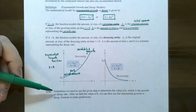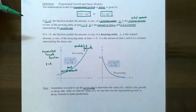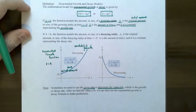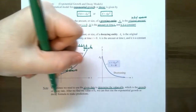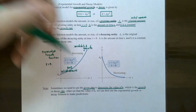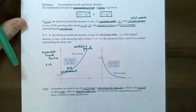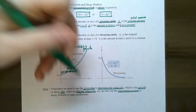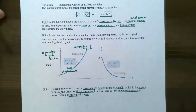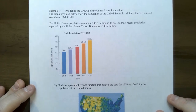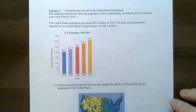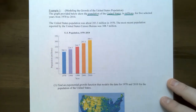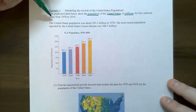Sometimes we need to use given data because the growth rate may not be given. We will use data in the next example to determine the growth rate k. To find the value of k, we need to use two data points, and once we find k we can use the exponential growth function to make predictions. In our first example, we're going to look at the population of the United States.